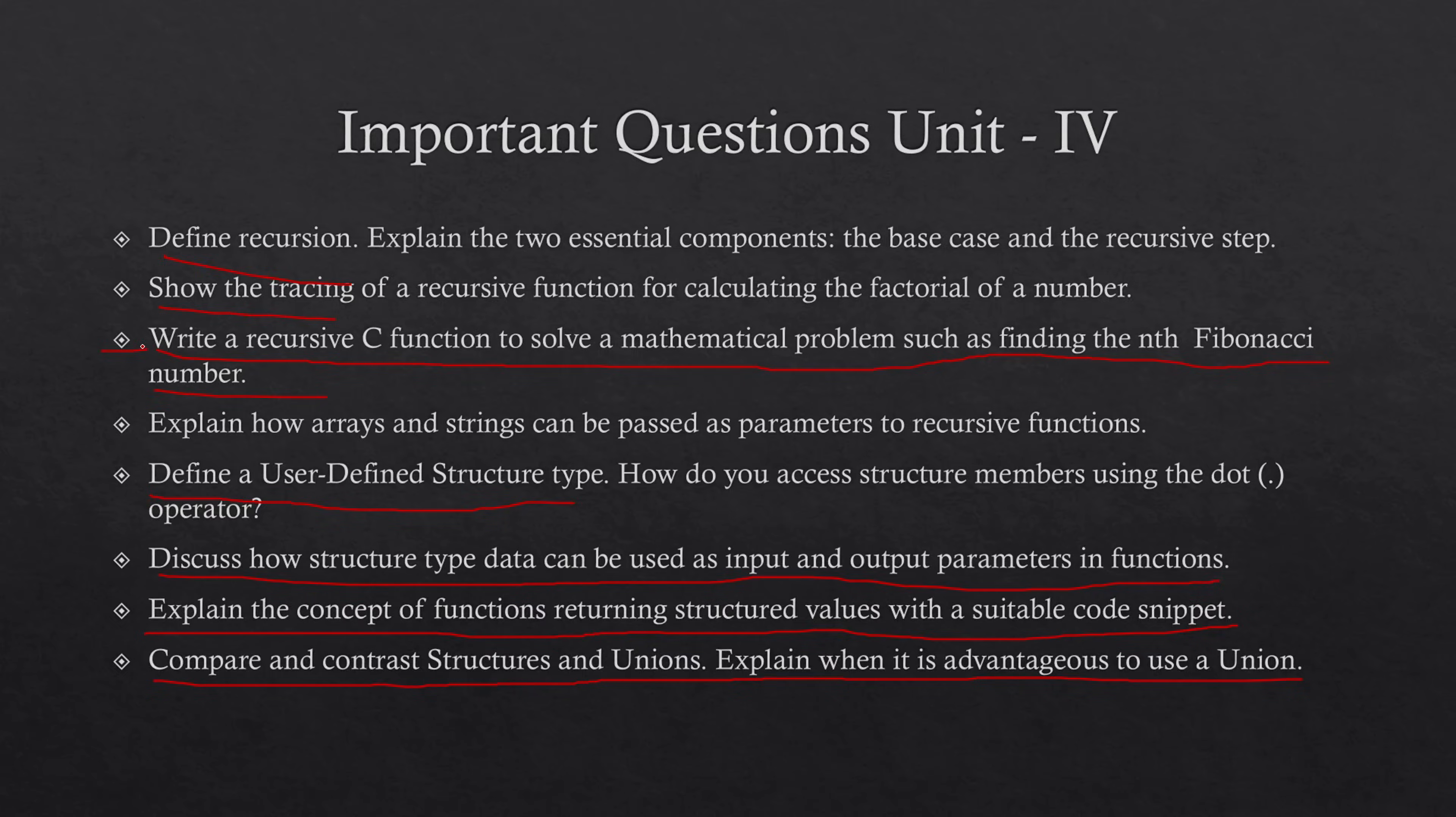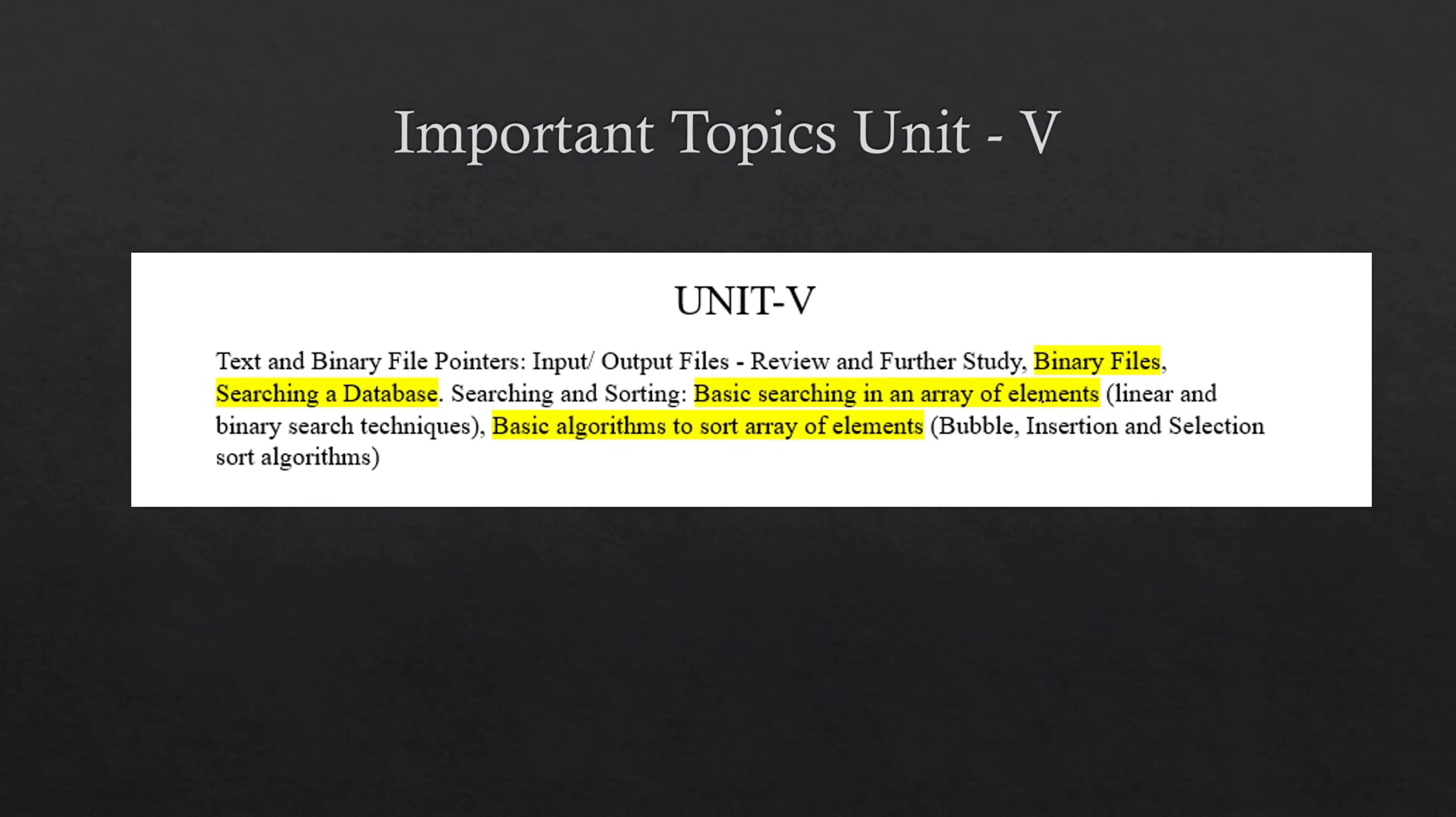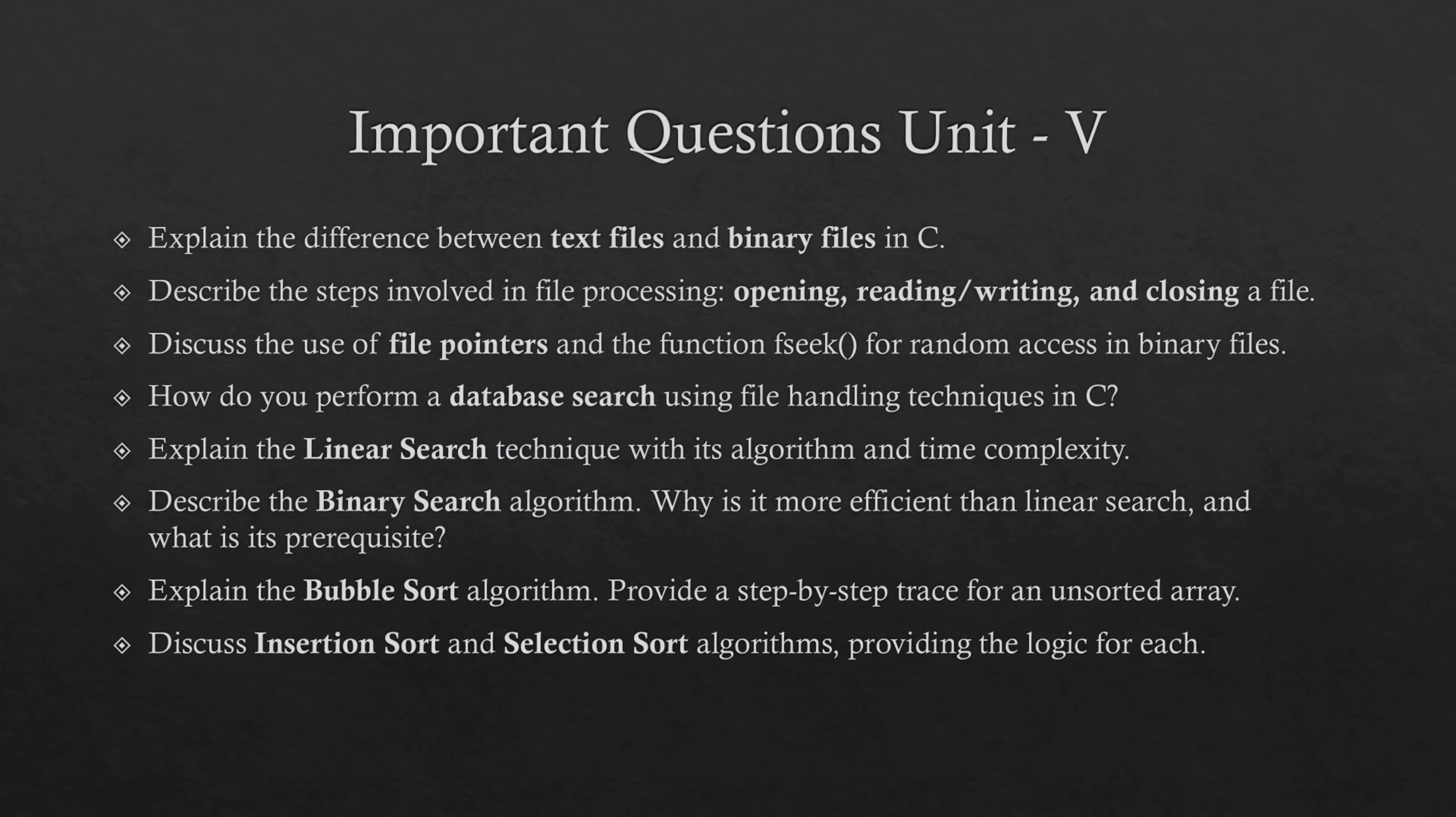Unit 5: you have binary files, searching a database, basic algorithms. Explain the bubble sort algorithm, provide a step-by-step case for it. Discuss insertion sort and selection sort algorithm, providing logic for each. Explain the linear search technique with the algorithm. These are about file pointers: steps involved in file processing - opening, reading or writing, and closing a file. What are the steps in file processing and difference between text files and binary files in C.